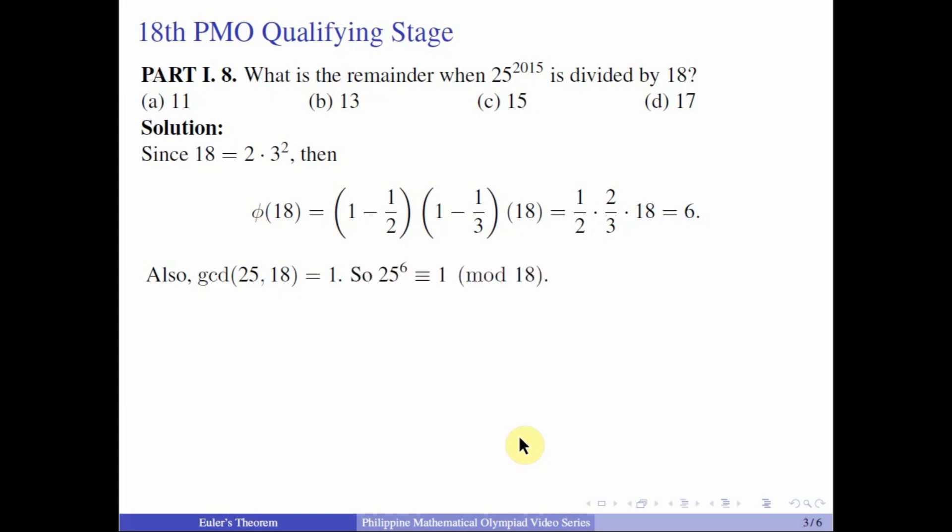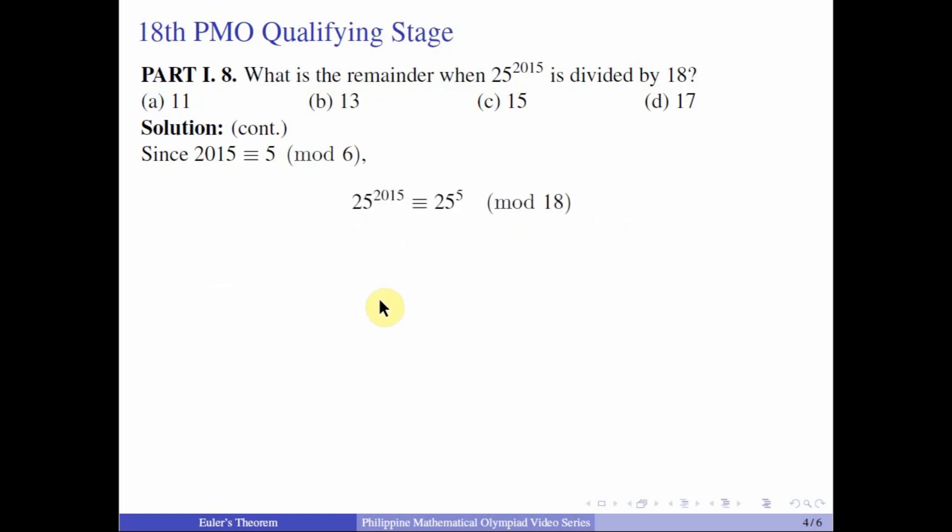And so by Euler's theorem, 25 raised to 6 is equal to 1 mod 18. This means that for every 6 factors of 25 is just equivalent to 1. And so the expression given to us would be congruent to the remaining factors that cannot be grouped into 6. We will be interested in dividing 2015 by 6 and take its remainder. We know that 2015 is congruent to 5 mod 6. So which means that 25 raised to 2015 is just congruent to 25 raised to 5 mod 18.